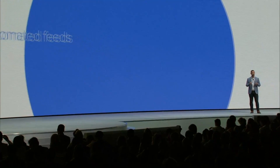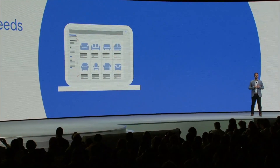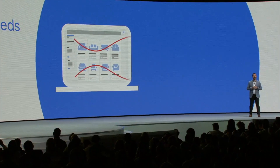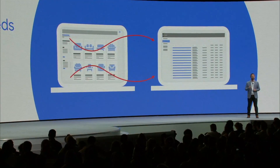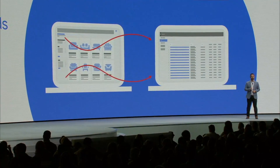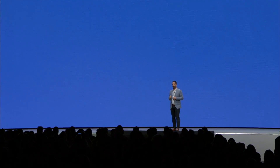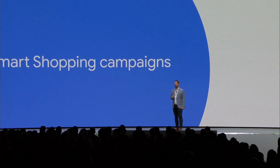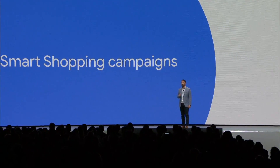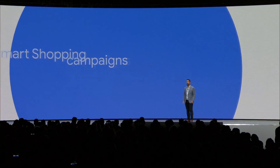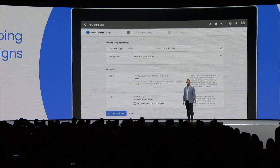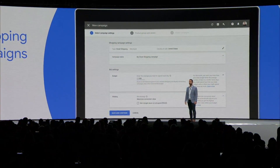Automated feeds crawls your website, gathers the relevant details, and automatically builds a feed from your online inventory. In May, we announced a new type of shopping campaign that automatically optimizes to the goal you select. It runs your shopping ads across Google's major properties and includes display remarketing. So we have more exciting features coming soon for Smart Shopping campaigns.